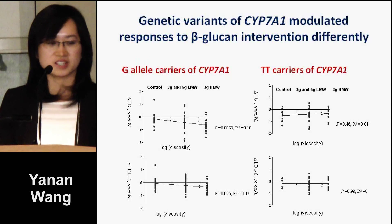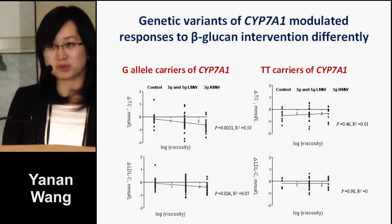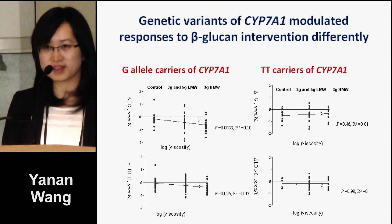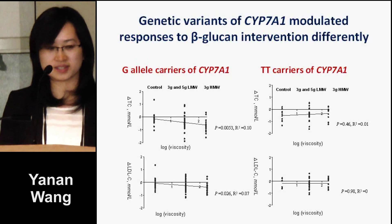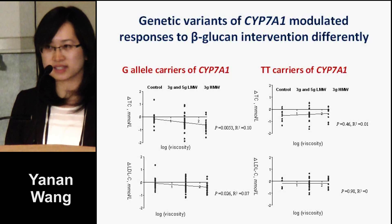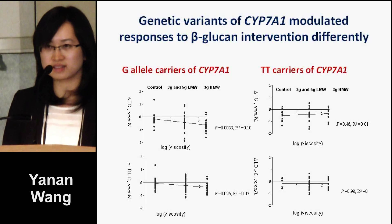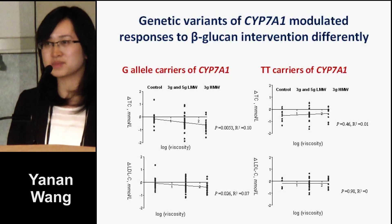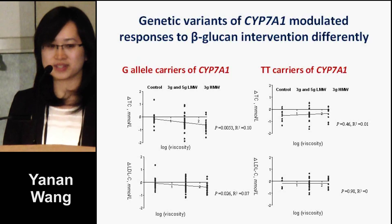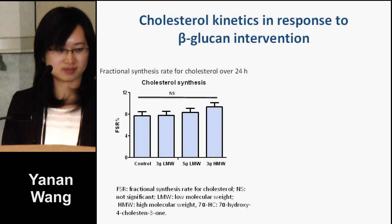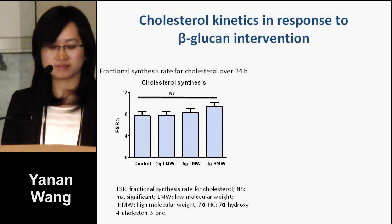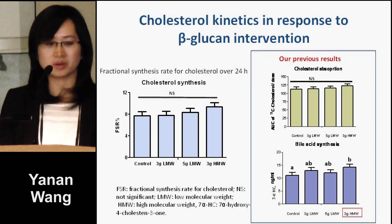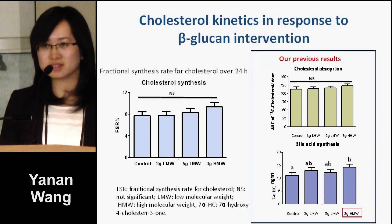Beyond the effective dose of 3 grams per day, strong evidence suggests that physicochemical properties of beta-glucan in terms of molecular weight and viscosity play critical roles in its cholesterol-lowering effect. A study showed a linear regression between the LDL reduction at the end of the beta-glucan intervention and the log viscosity. They also showed that high molecular weight beta-glucan and medium molecular weight beta-glucan lowered cholesterol, but low molecular weight beta-glucan did not.